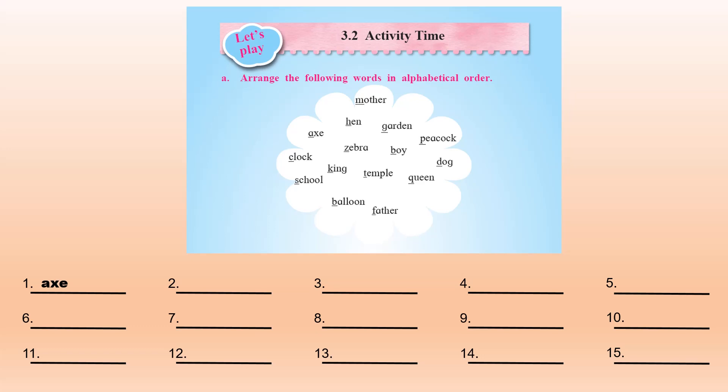In such a case where we have two or more words beginning with the same letter, we have to look at the second letter and arrange according to alphabetical order again. Here B-A for balloon and B-O for boy. The letter A comes before the letter O, so we will write balloon first and then boy.